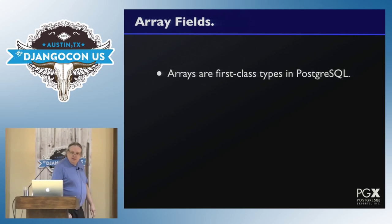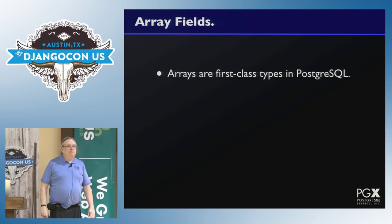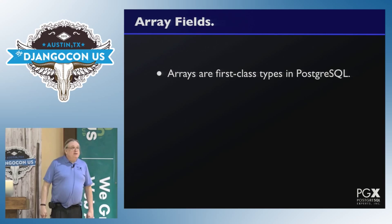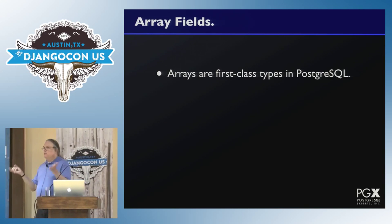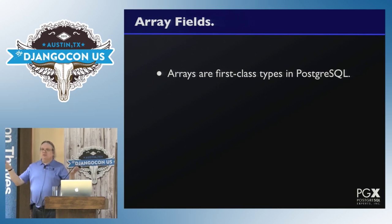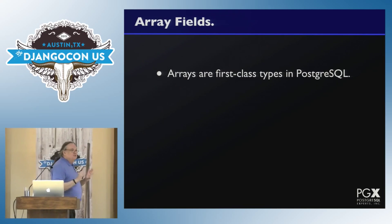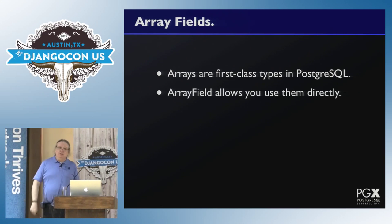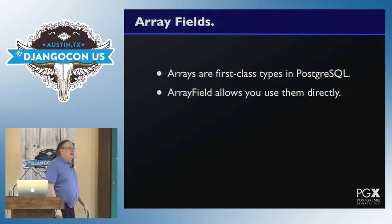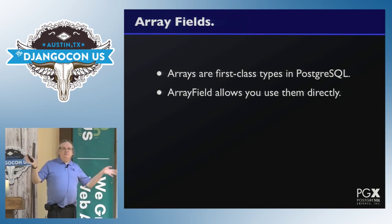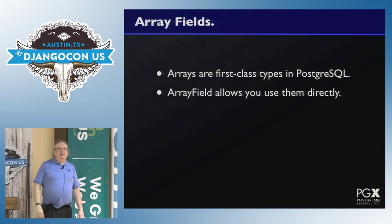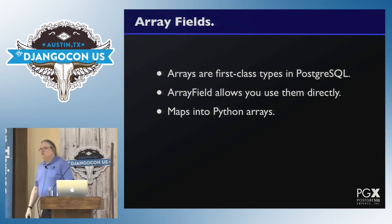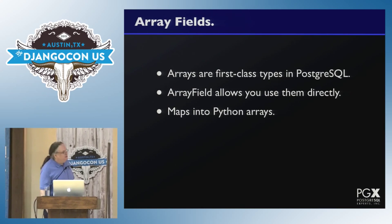So, an array field. In Postgres, since pretty much the dawn of time, arrays are first-class types — you can have a single column that is an array. Old-school database people's heads explode at this point because this is denormalization and it's horrible. Forget those people — they're old and in the way. An array field is now a field you can import from Django Contrib Postgres, and it lets you use those directly. Before, there were tons of things you could find on Django snippets, but now it's fresh out of the box. These map into Python lists.